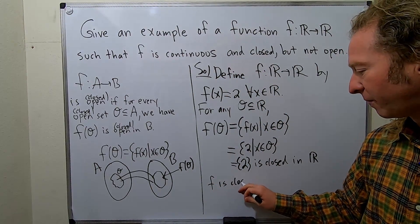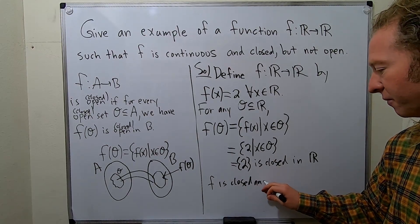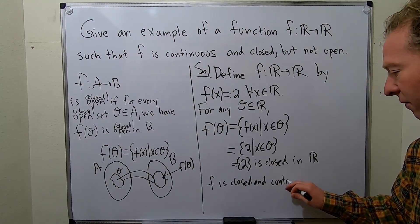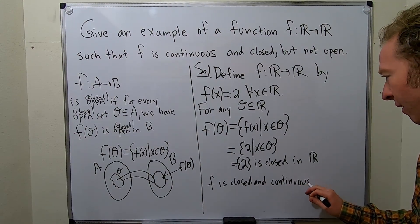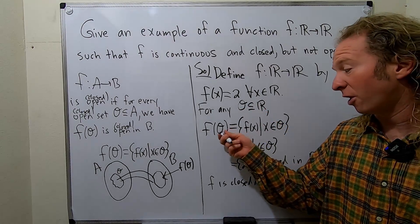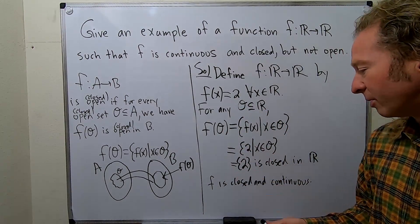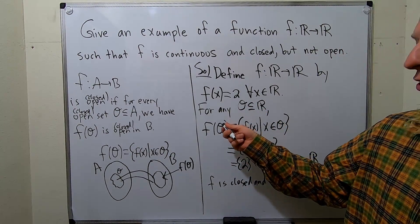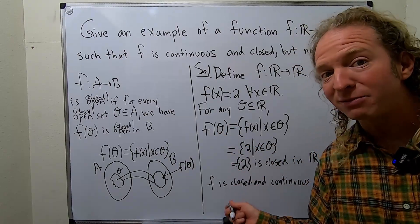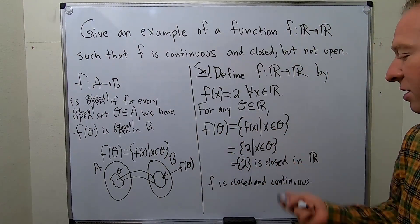So f is closed and continuous. Again, this is for any set o. So if o is closed, this is closed. So in particular, it's a closed map because it takes closed sets and maps them to closed sets. And it's continuous because it's the constant function.